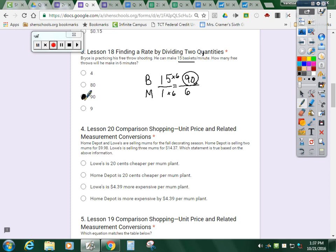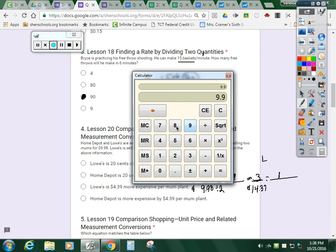Number four. Home Depot and Lowe's are selling mums. So I'm going to make an equal fraction for Home Depot and one for Lowe's. Home Depot is selling two mums for $9.98. Lowe's is selling three mums for $14.37. So you want to scale down to figure out how much per one mum is being sold at each place. Because you can't compare them now. There's two different units. So I'm going to scale down to find the unit rate. Divide by two, divide by two.